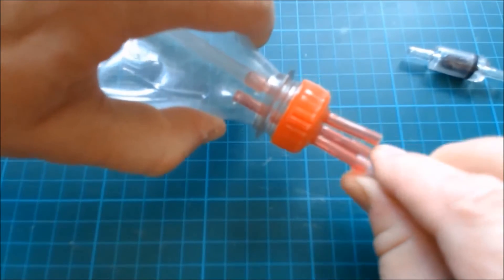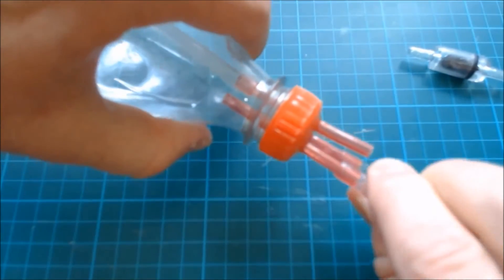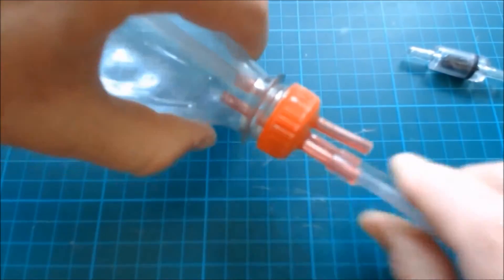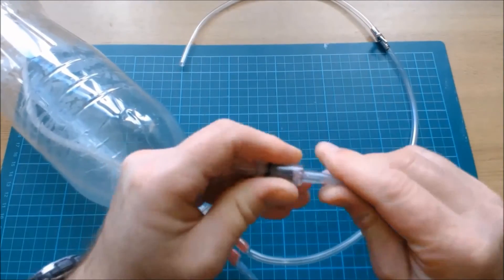Cut a forty centimeter or sixteen inch length of tubing and connect it to the second long straw. The other end of the tube is connected to the non-return check valve.